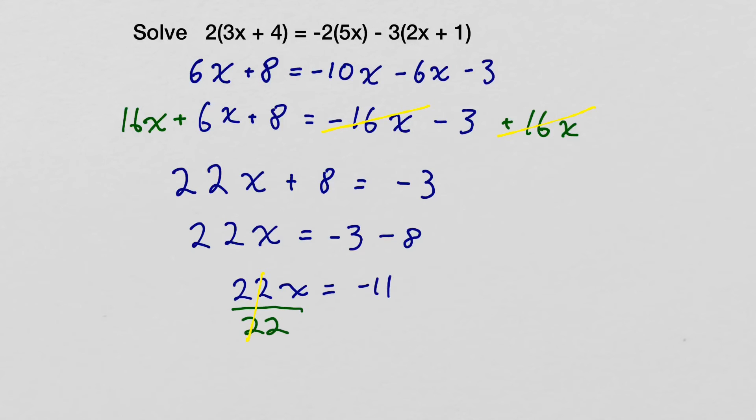But because I did this to the left side of the equation, I have to do it to the right side of the equation as well. And that gives us an answer of x equals negative 11 over 22.